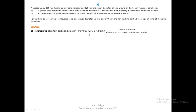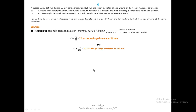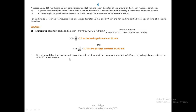For machine A (drum-driven winder), traverse ratio at a given package diameter = traverse ratio of drum × (diameter of drum / diameter of package). Substituting: 5 × (75/50) = 7.5 at 50 mm diameter, and 5 × (75/100) = 3.75 at 100 mm diameter. It is observed that traverse ratio decreases from 7.5 to 3.75 as package diameter increases from 50 to 100 mm, as expected from theory.